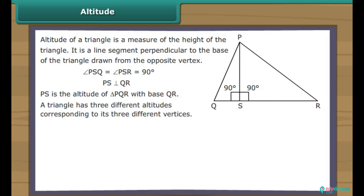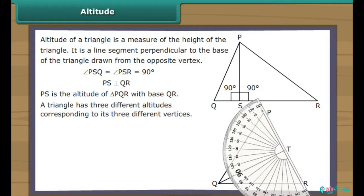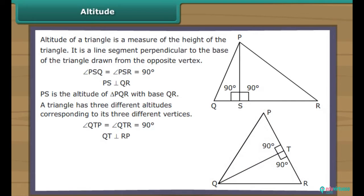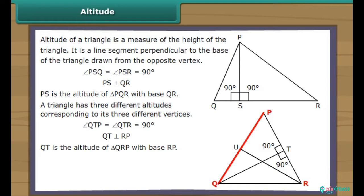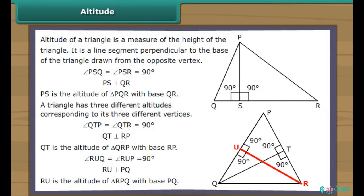A triangle has three different altitudes corresponding to its three different vertices. We draw a line segment from Q perpendicular to RP at point T. It intersects RP at right angles. Therefore, QT is the altitude of triangle QRP with base RP. We draw another line segment from R perpendicular to PQ at point U. It intersects PQ at right angles. Therefore, RU is the altitude of triangle RPQ with base PQ.